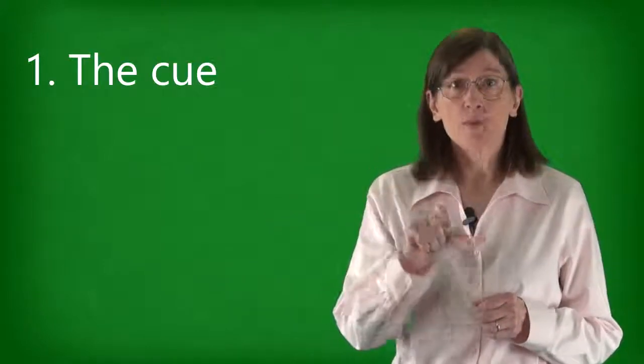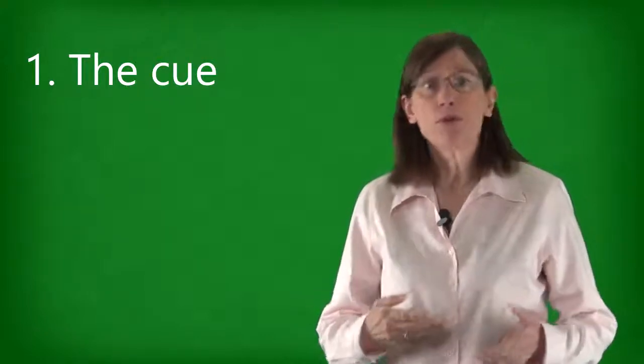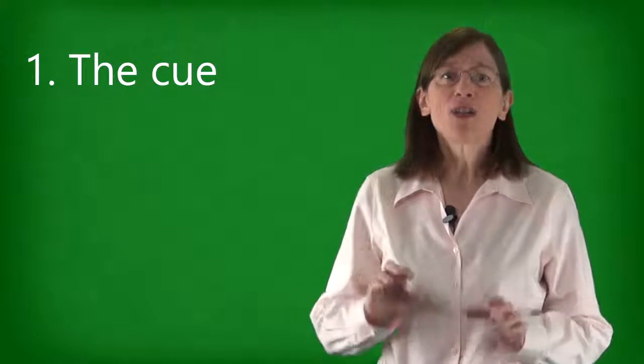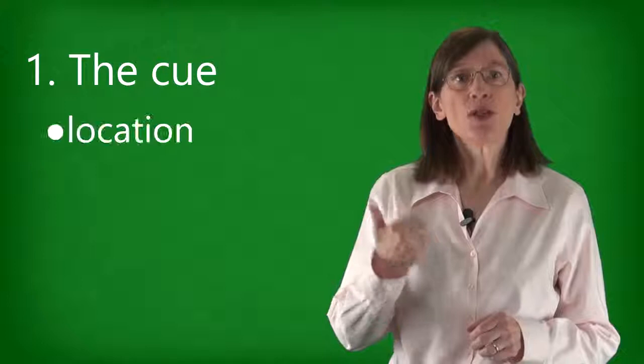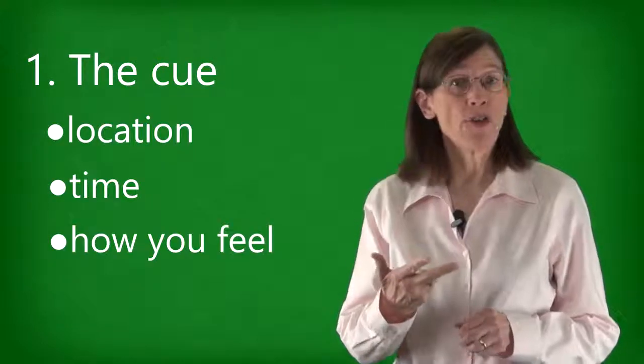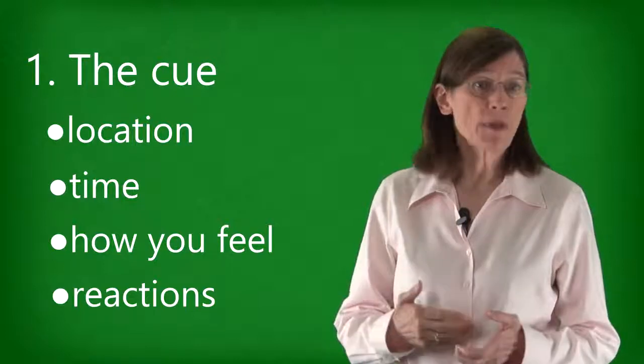The first one is the cue. Recognize what launches you into your zombie procrastination mode. Cues usually fall into one of the four following categories: location, time, how you feel, and reactions, either to other people or to something that just happened.